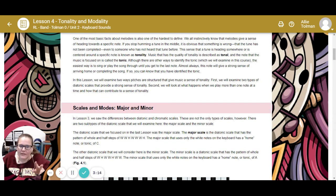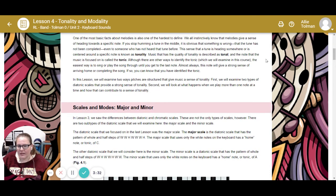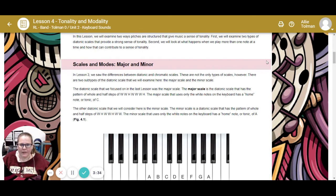In this lesson, we're going to examine the two ways that pitches are structured that give music a sense of tonality. First, we're going to examine two types of diatonic scales. Second, we're going to look at what happens when we play more than one note at a time. In lesson three, we saw the difference between diatonic and chromatic scales. Chromatic scales is every note between this note and this note, white and black keys.